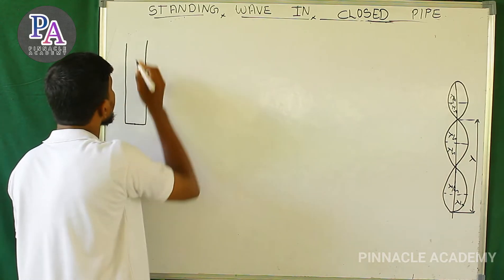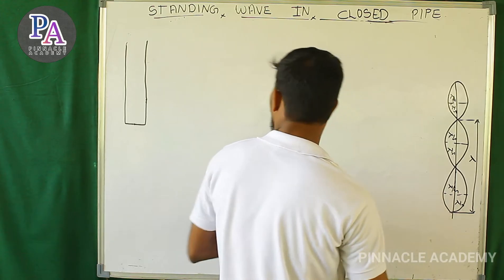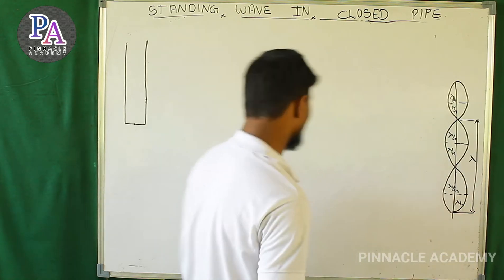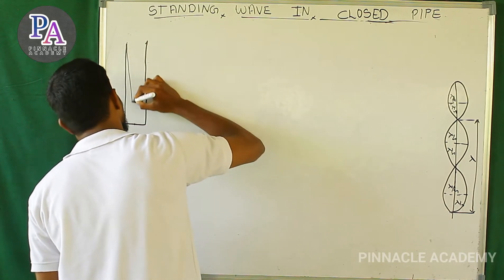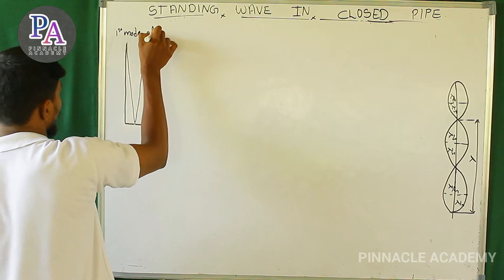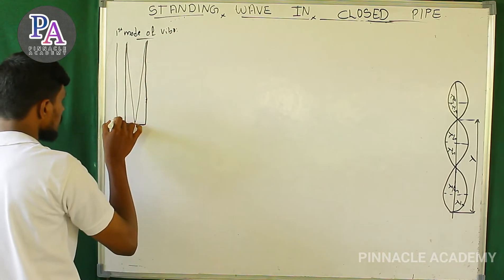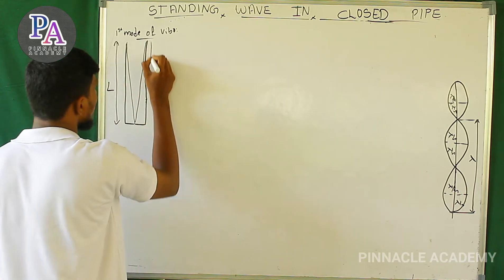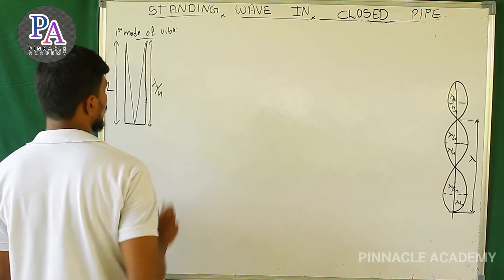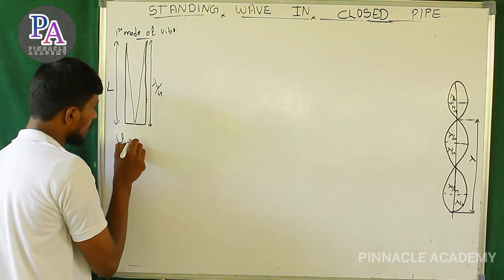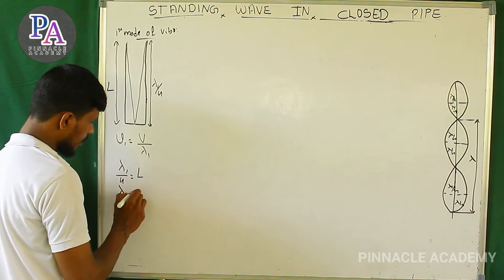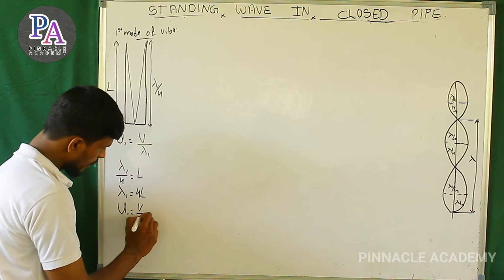Now with the closed pipe we have a node at the closed end. We put this node into an antinode at the open end — this is the fundamental mode of vibration. For the first mode, the pipe length L equals lambda₁ by 4, so lambda₁ equals 4L. Therefore ν₁ equals v by lambda₁, which gives ν₁ equals v by 4L.